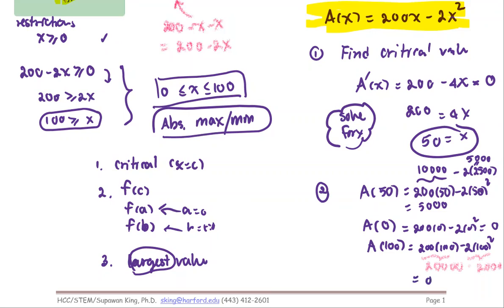At X equals zero, that means no width. If no width, no fence. If you use 100 as the width, you have no more fence to form the length. So basically, it cannot happen at zero or at 100. So then the winner is A at 50.